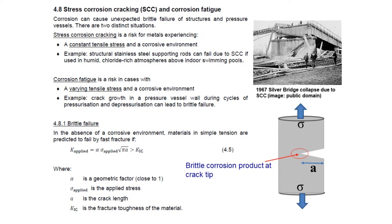Stress corrosion cracking and the related mechanism corrosion fatigue can cause unexpected brittle failure of structures and pressure vessels after potentially a quite long time in service. Stress corrosion cracking is a risk for metals which experience a constant tensile stress in a corrosive environment — for example, stainless steel structural reinforcing bars holding up a load, structural elements in bridges under constant tensile stress, or pressure vessels permanently containing high pressure.